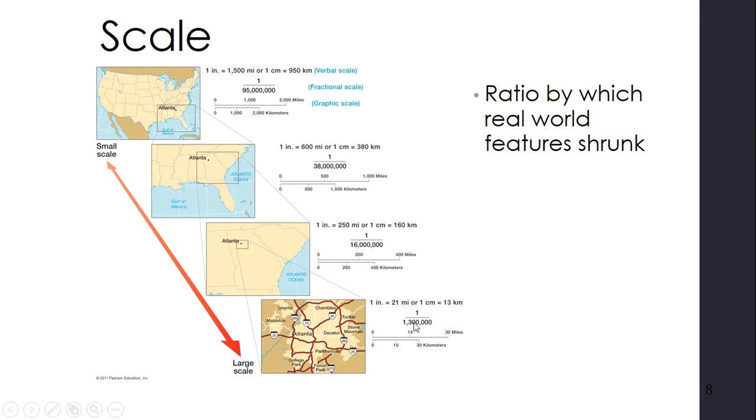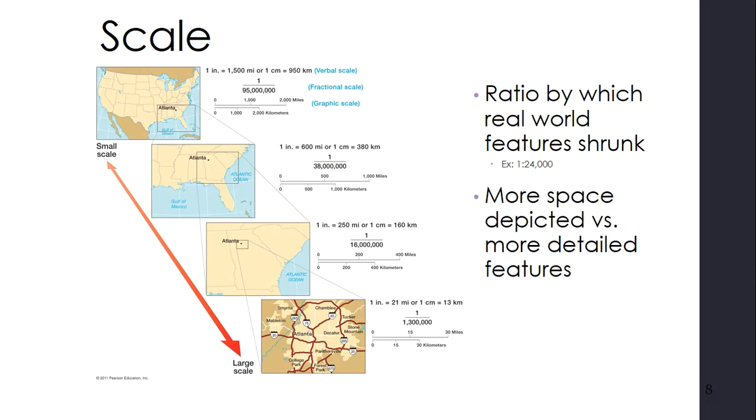But the scale for a large scale map is 1 to 300,000. So we're zooming in. As we zoom in, the scale gets larger. Example 1 to 24,000. More space depicted versus more detailed features. So we use different maps of different scale depending on what we want to look at. We want to know where the 50 states are. We're going to use a small scale map. We want to know how to get around at least the metro Atlanta area. We're going to use a large scale map. We want to go get down to how we get around our neighborhood. We're going to look at a very large scale map.